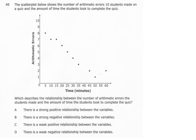All right, number 49. The scatter plot below shows the number of arithmetic errors 10 students made on a quiz and the amount of time the students took to complete the quiz, and it wants to know the relationship between arithmetic errors and the amount of time it took them to complete the quiz.